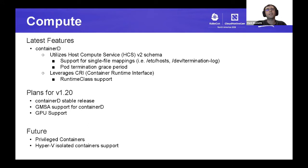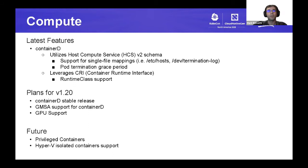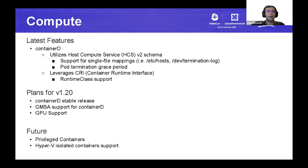Key benefits include addressing parity issues with Linux containers. With the new schema, we can properly support single file mappings, so you can get an updated etcd hosts file into your container, and containers can write to /dev/termination-log for error messages. Additionally, ContainerD is fully based on CRI (the Container Runtime Interface), meaning Windows will automatically get CRI interface updates when using ContainerD.